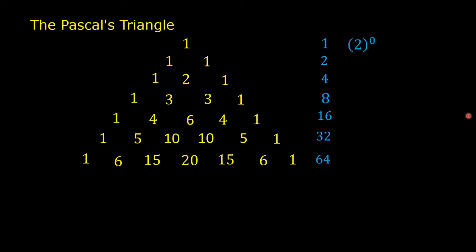These sums can be written as powers of 2: 1 is 2 to the 0; 2 is 2 to the 1; 4 is 2 squared; 8 is 2 cubed; 16 is 2 to the 4th; 32 is 2 to the 5th; and 64 is 2 to the 6th.